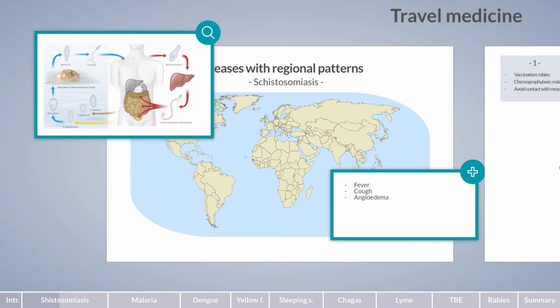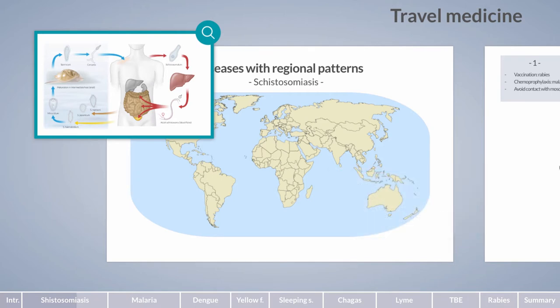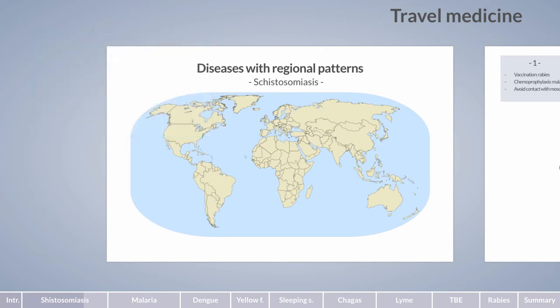Depending on the schistosoma type, adult worms migrate to the intestine or bladder, resulting in two main forms of chronic schistosomiasis. Intestinal schistosomiasis presents with abdominal pain and bloody diarrhea, whereas urogenital schistosomiasis presents with dysuria and hematuria. If the eggs enter the bloodstream, they are transported to other organs such as the liver, kidney, or central nervous system. Schistosomiasis is the leading cause of portal hypertension worldwide.